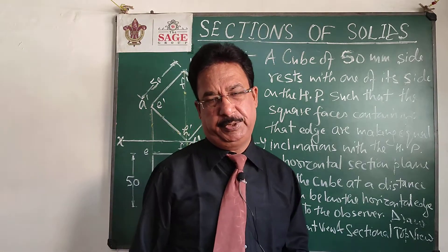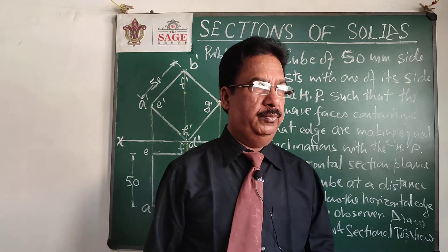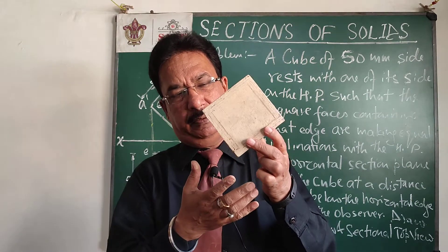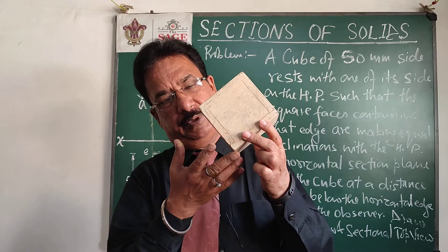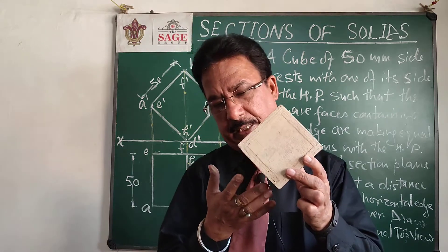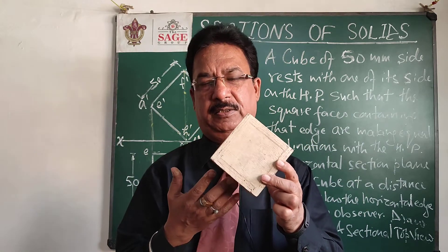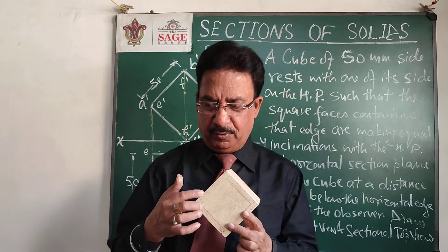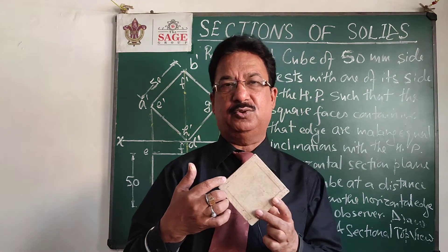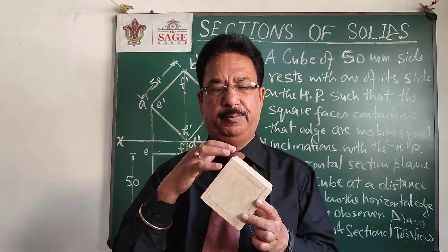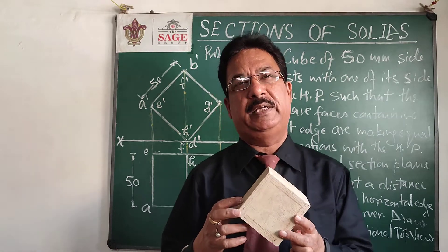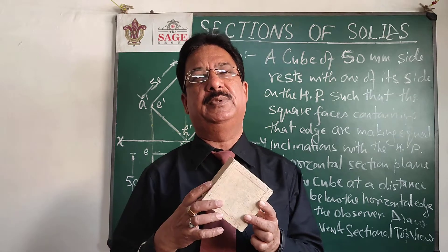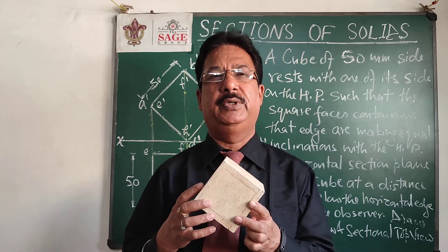The position will be: there will be a cube kept in such a way that one of its sides is on the HP, and the two faces containing that edge are equally inclined to the HP. This is actually the case of a cube with all four faces equally inclined to the HP — similar to a square where all sides are equally inclined to the HP.